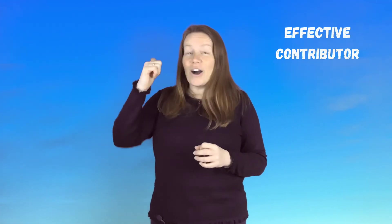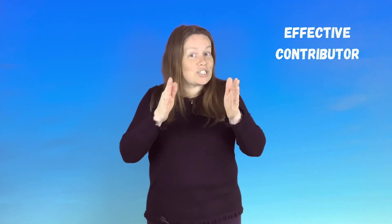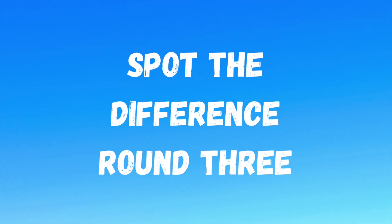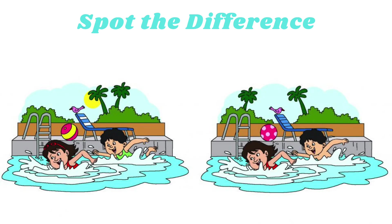We have another game for you — we're back for the third spot the difference. Can we all be effective contributors this time? Let's have your time for one minute, concentrate just for one minute, and see if you have the desire to find all 10 things. Here we go — round three! This time we've got a swimming pool scene. We've got trees, a bird, a chair, a ball, and people on the water. How many differences can you find?